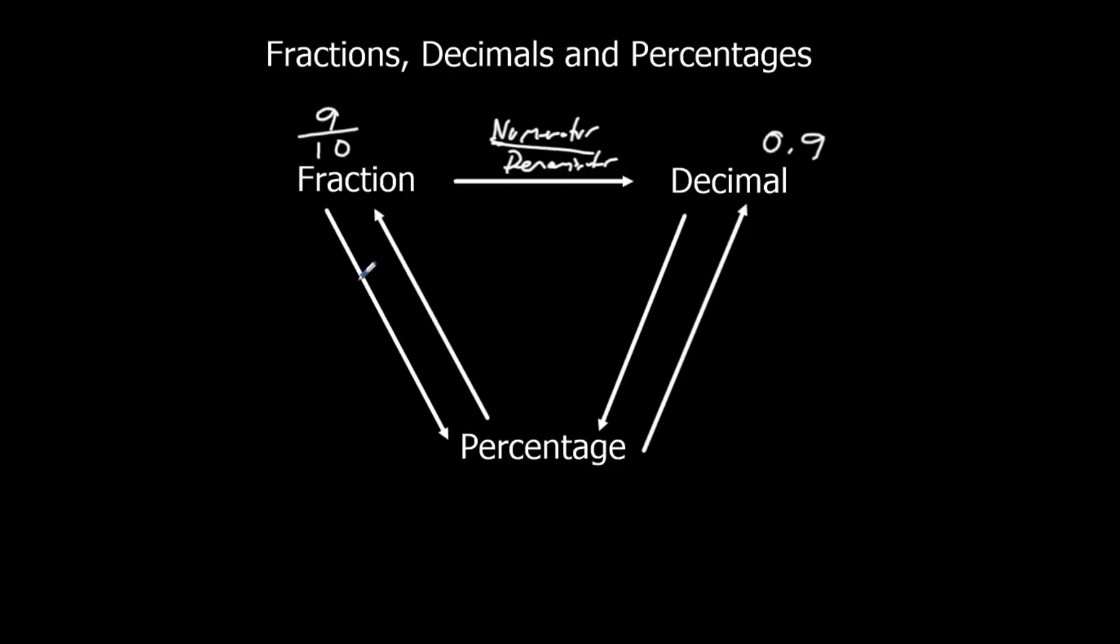If I want to change a fraction to a percentage, I have to times it by 100. So 9 tenths times 100. Well, 100 over 1, 9 times 100 is 900, 10 times 1 is 10. And then 900 divided by 10 is 90. So that's 90%.